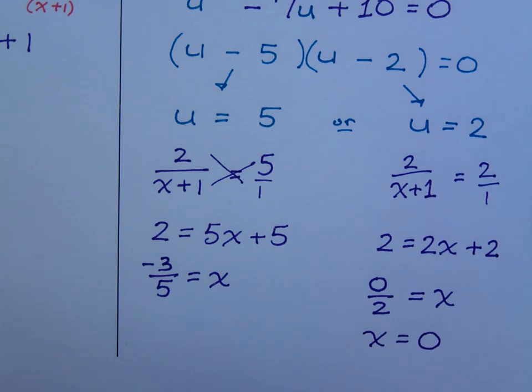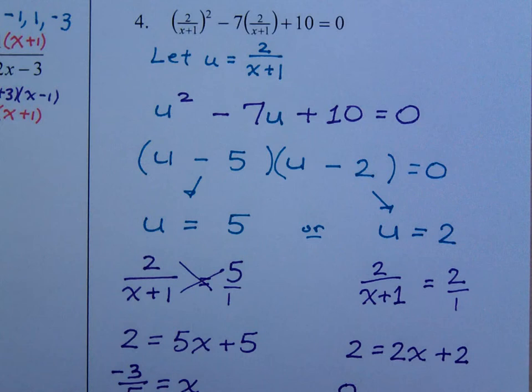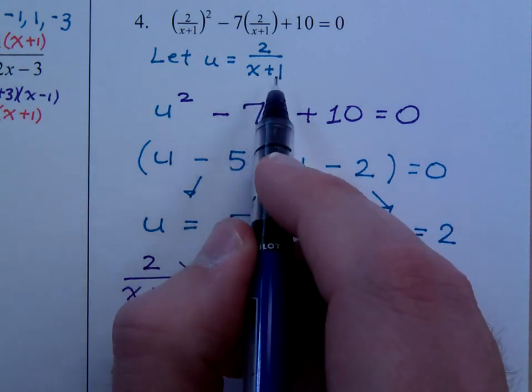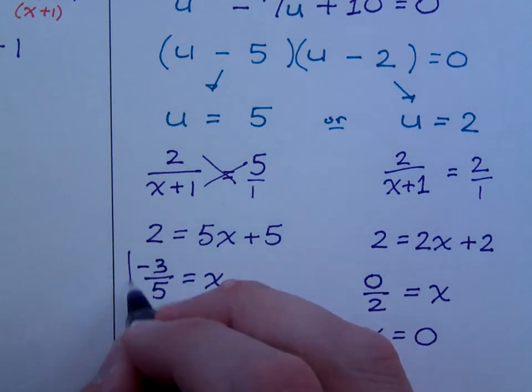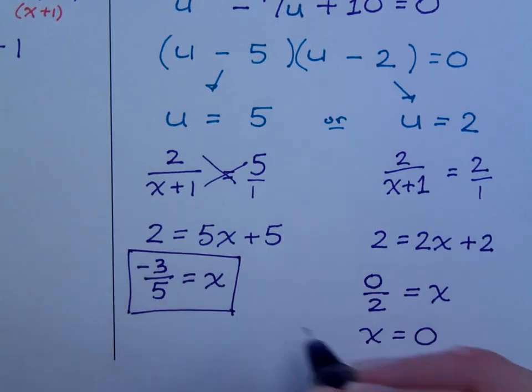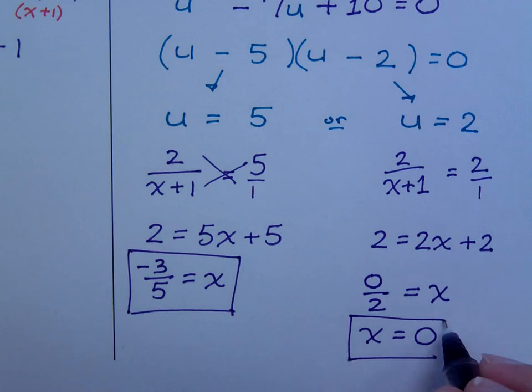In the original problem, if you look up here, this was my denominator x plus 1, so x could never equal negative 1. Well, I don't have that. So these answers appear to be good, as long as I've done everything well up to that point.